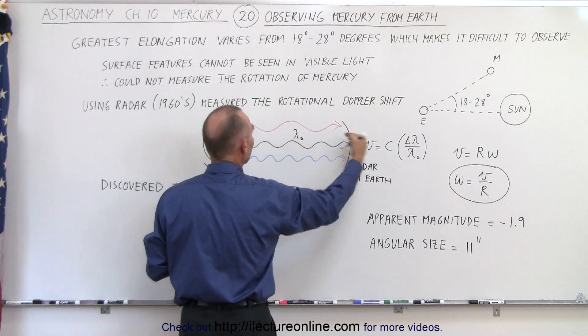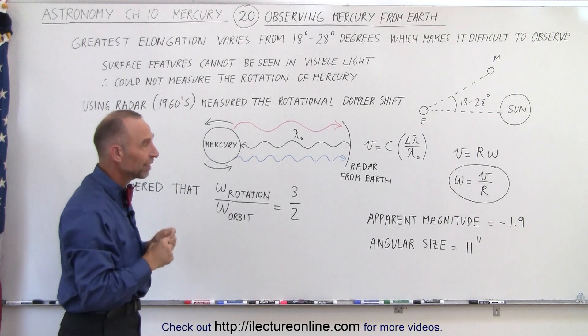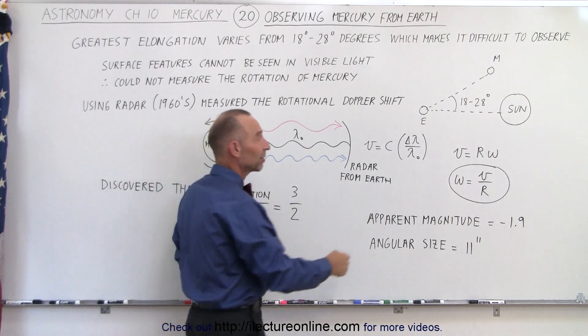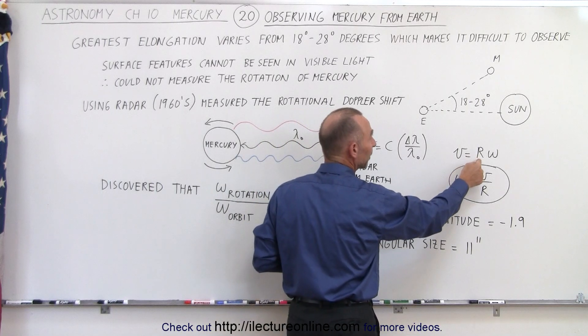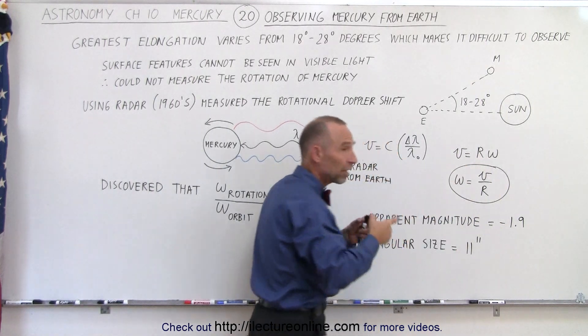So, here we have the original wavelength going to the planet, and then we have the shifted wavelength coming back. We can measure that shift, and from that we can calculate the velocity. Then we realize that the velocity is equal to the radius of the planet times the angular velocity of the planet,